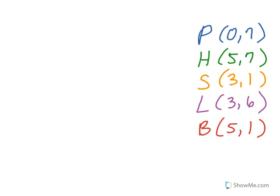Since the post office and hospital share the same y value of 7, we're going to subtract the x values. So in this case, we're going to take 5 minus 0 equals 5. This means the post office and hospital are 5 units apart.